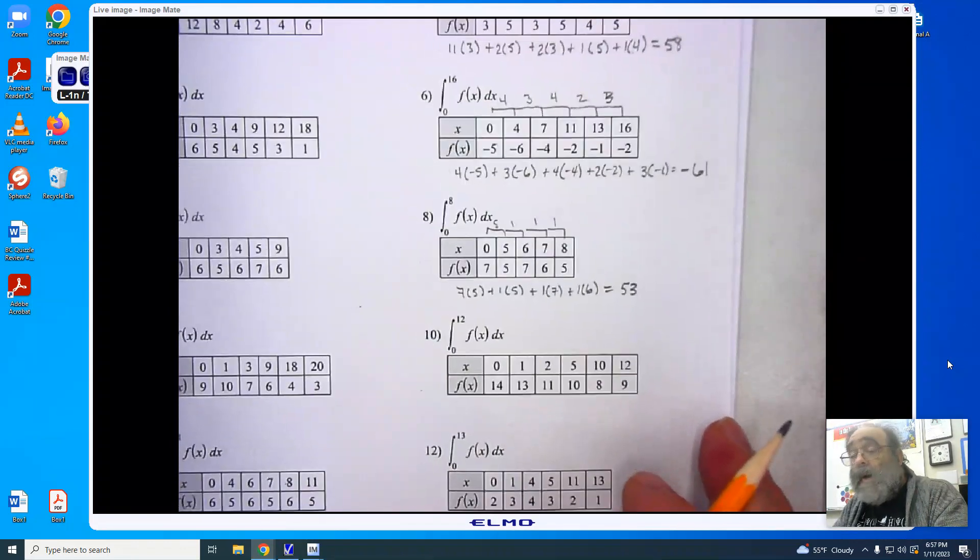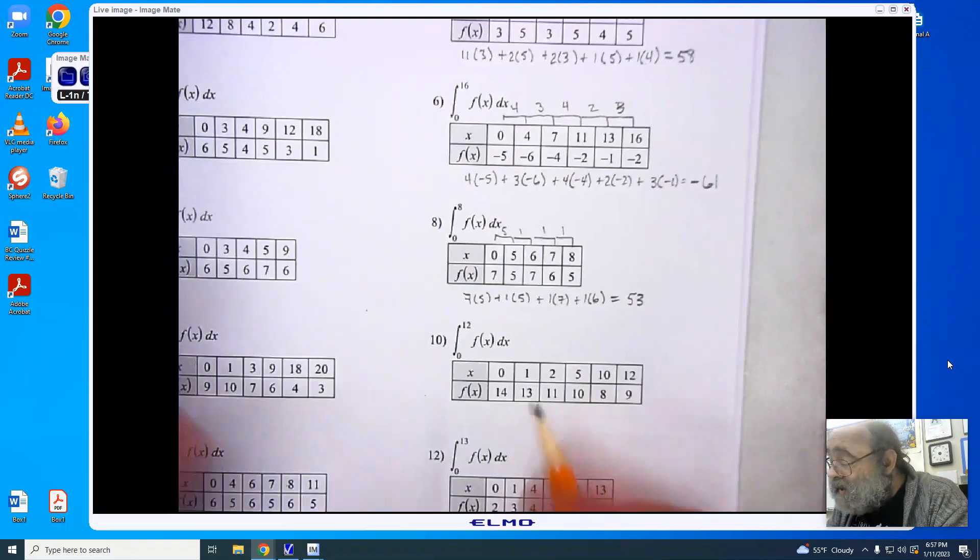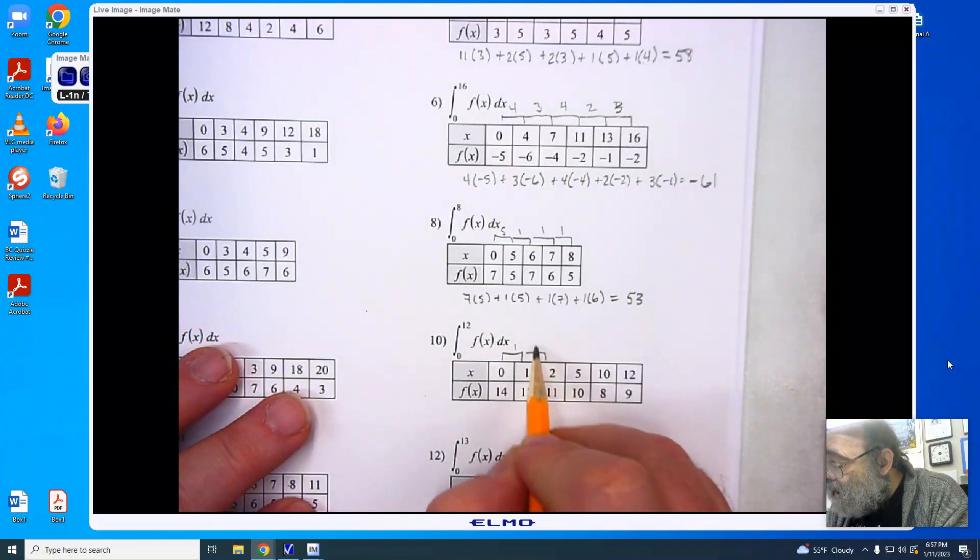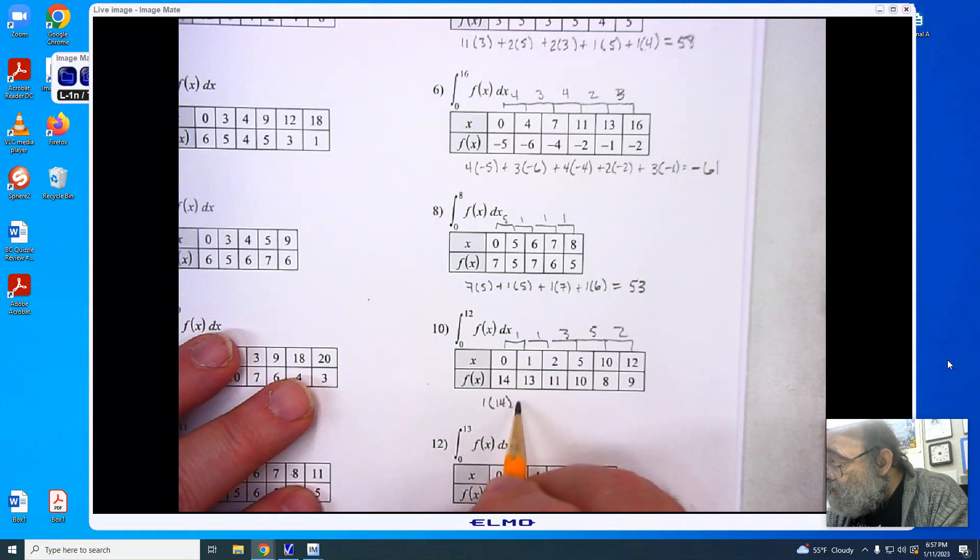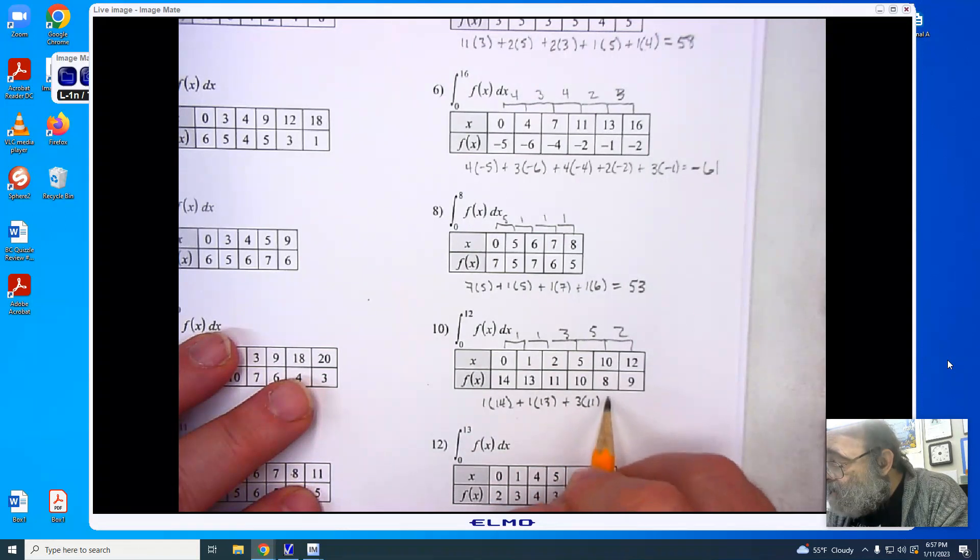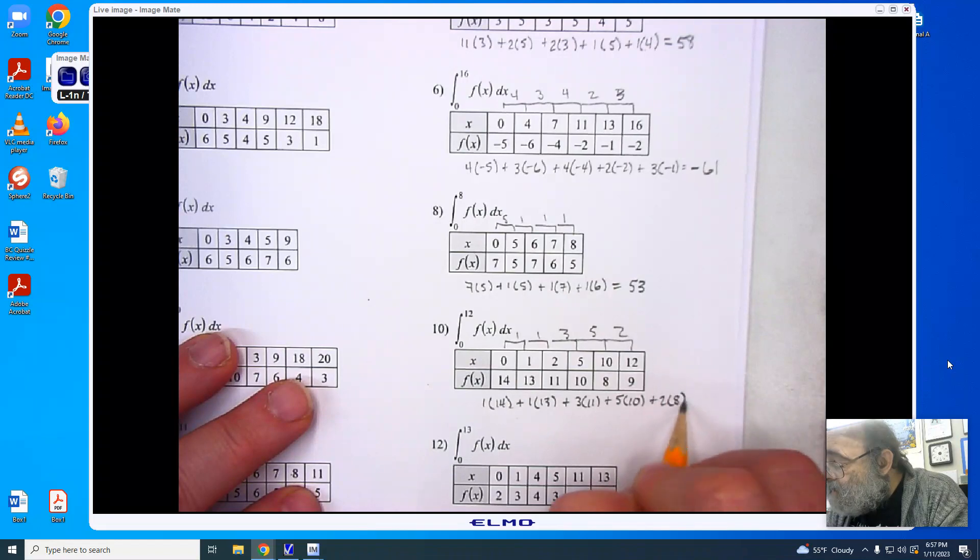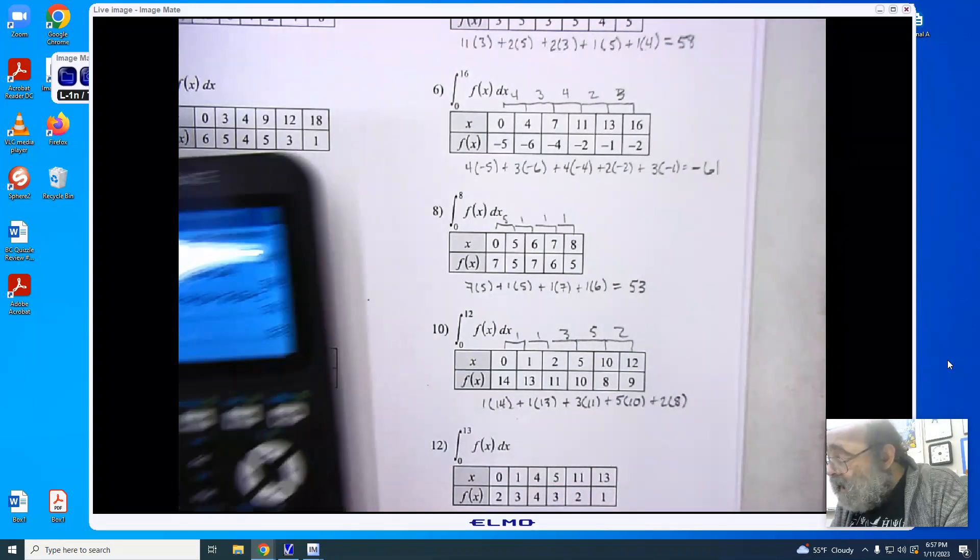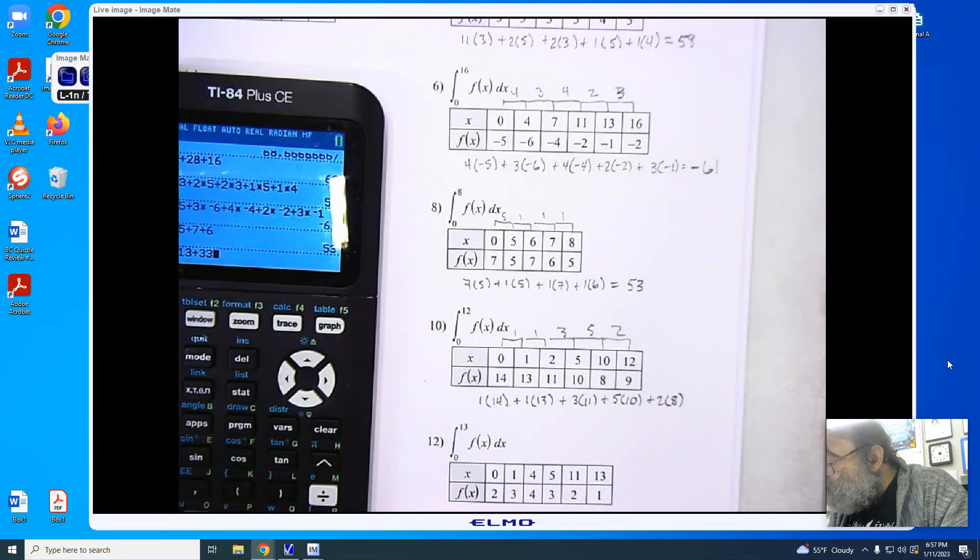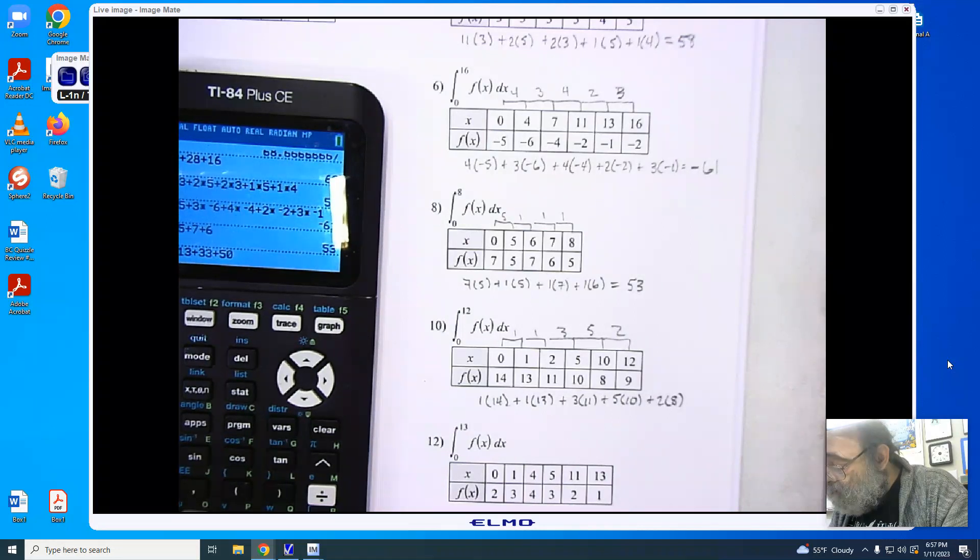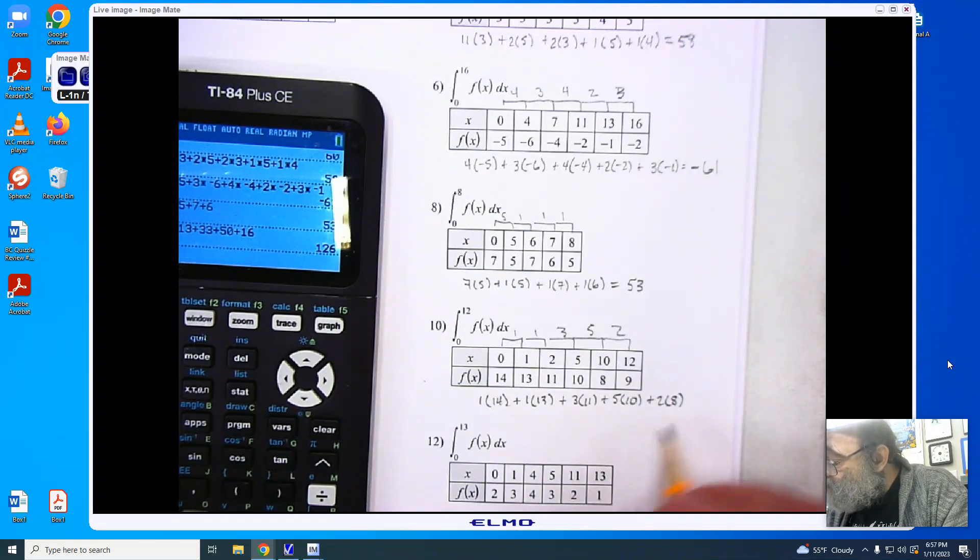All righty. Now, continuing with this, let's just keep going. We have a gap of 1, gap of 1, gap of 3, gap of 5, gap of 2. 1 times 14, 1 times 13, 3 times 11, 5 times 10, and 2 times 8. Adding them up, we have 14 plus 13 plus 33 plus 50 plus 16. And our answer is 126.